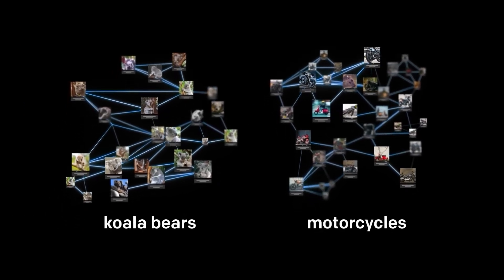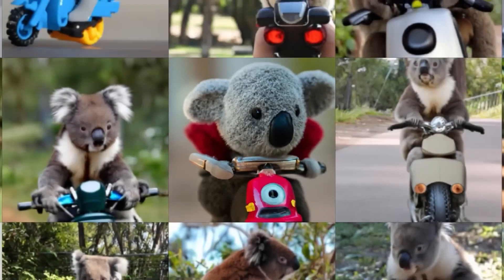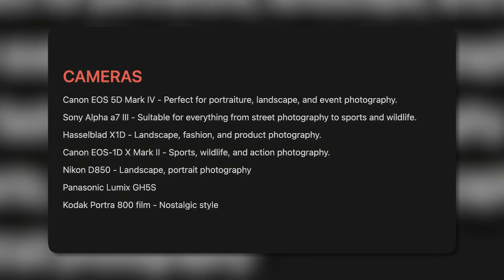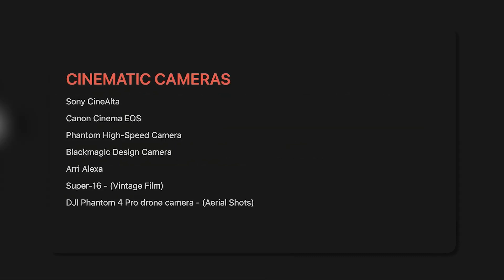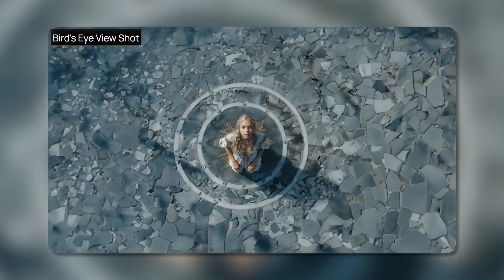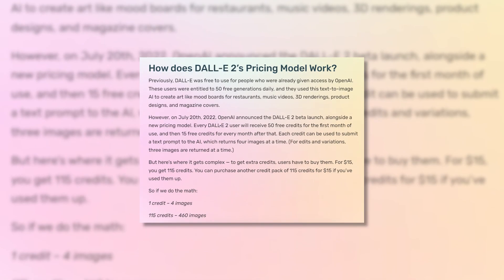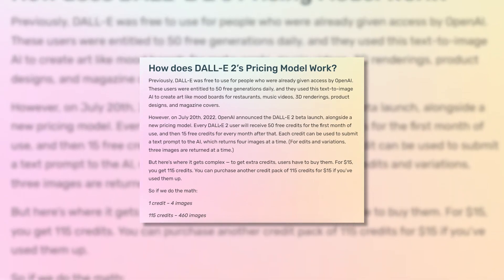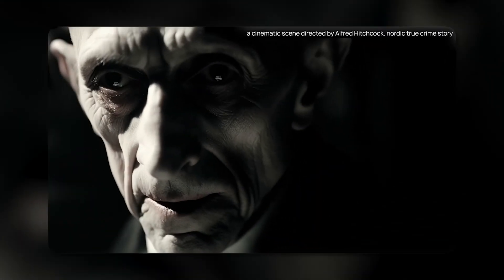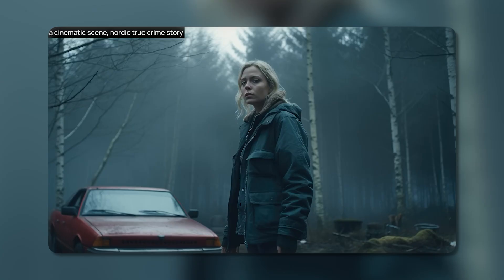First and foremost, be as detailed and specific as possible with your prompts. The more information you give DALL-E 2, the better it can construct what you envisioned. When aiming for photorealism, include details like camera angle, focal length, lighting, and more — you can even specify a camera brand like Canon or Nikon in the prompt. Don't be afraid to edit an initial image and refine the prompt if needed. Swapping out words like 'smiling' instead of 'frowning,' or making the lighting brighter instead of dark, can drastically improve results. DALL-E 2 allows up to 4 free edits on each generated image, so take advantage.